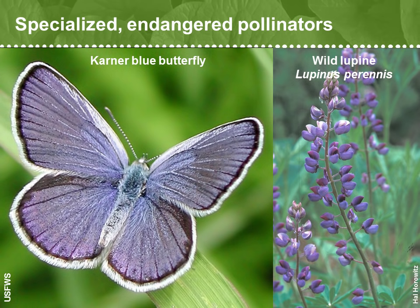Some pollinators are especially stressed when they're dependent on only one type of plant on which to lay eggs, feed, and complete their life cycle. This federally endangered Karner blue butterfly needs native lupine, Lupinus perennis, which has become rarer due to the wholesale loss of the lupine's sandplain habitats. The good news is that efforts are underway to restore many sandplains.